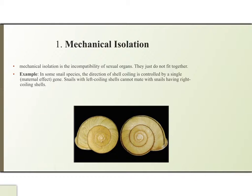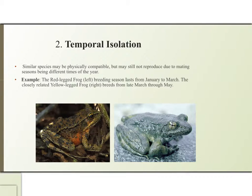Snails with left-coiling shells cannot mate with snails having right-coiling shells. The second type is temporal isolation — similar species may be physically compatible but may still not reproduce due to mating seasons occurring at different times of the year. An example of temporal isolation is the red-legged frog, as you can see in the left picture.